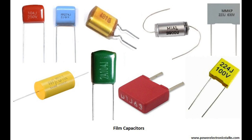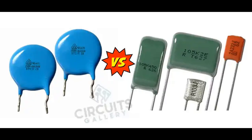The capacitance range refers to the range of capacitance values available for capacitors. Capacitance is the ability of a capacitor to store electrical charge and is measured in farads (F), or its multiples such as microfarads (μF), nanofarads (nF), or picofarads (pF). The capacitance range can vary widely depending on the type and size of the capacitor.